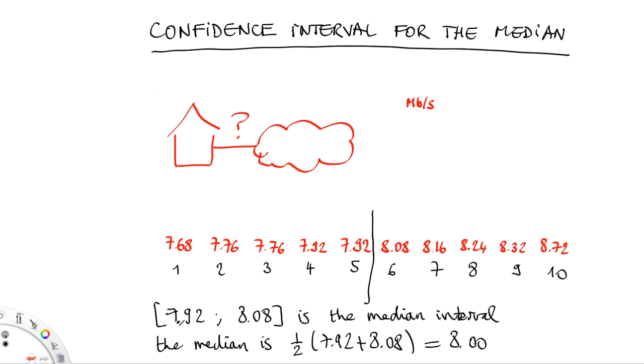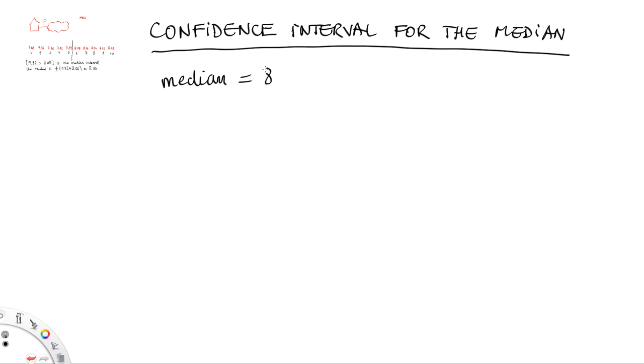The important thing about the median is that there are as many values below it as there are above. The median is an alternative way to summarize the data. Here it gives the value 8. We previously had used the mean, which gave a value of 7.982. They are not exactly the same, but they are in the same ballpark and we expect both of them to summarize the central value of the data.